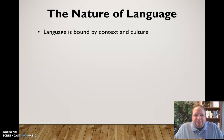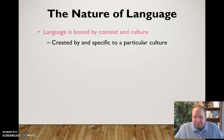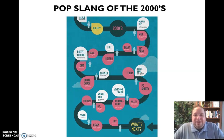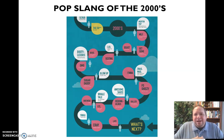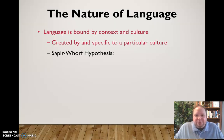Language is also bound by context. It's created by and specific to a particular culture, so the meaning of language depends on that context and culture. For example, some pop slang from the 2000s — words popular between 2000 and 2010 — like 'bootylicious,' 'awesome sauce,' or 'cray' have gone out of style. These words are specific to that culture; outside of it they don't make sense, but within that cultural context they make perfect sense.